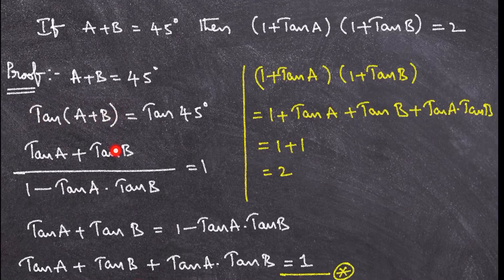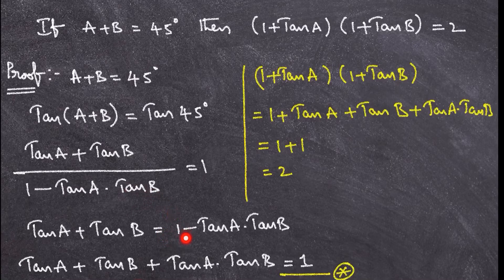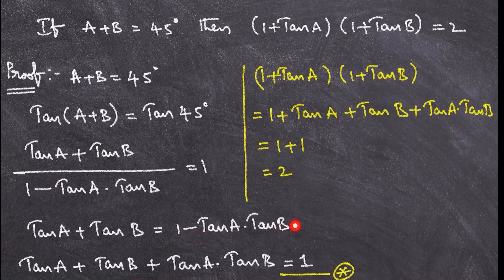The left-hand side is in the form of the tan(a + b) formula. tan(a + b) = (tan a + tan b) / (1 − tan a · tan b), and that equals tan 45°, which is 1. Cross-multiplying: tan a + tan b = 1 − tan a · tan b.